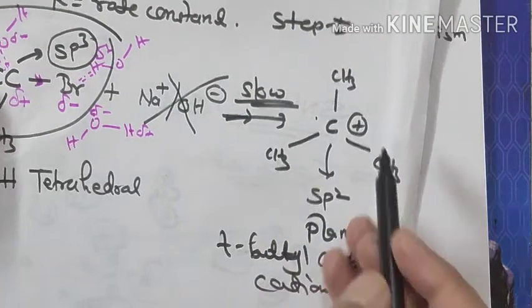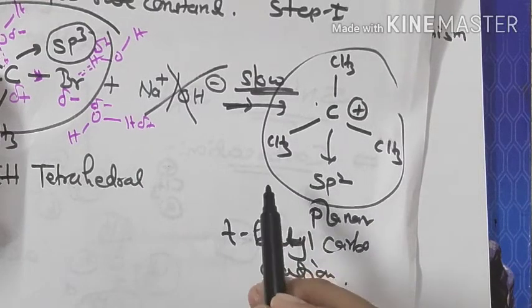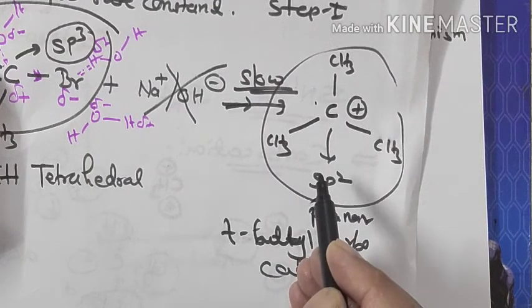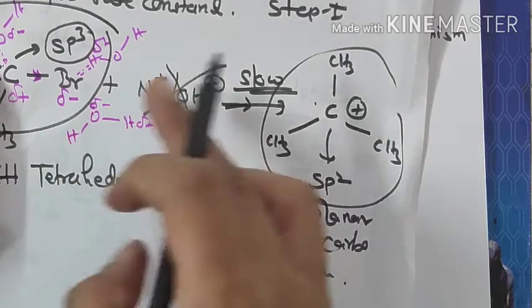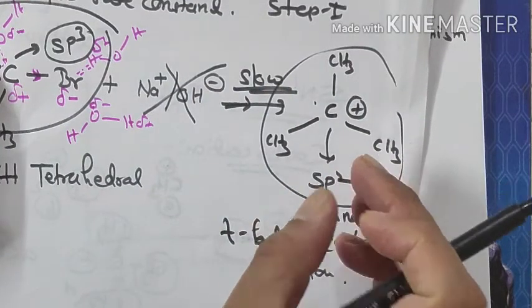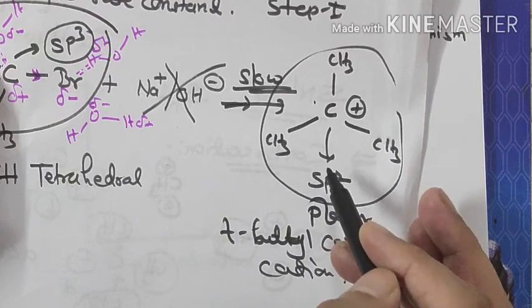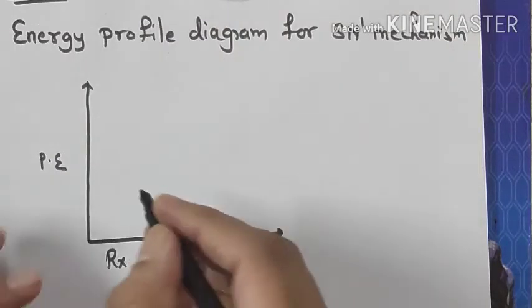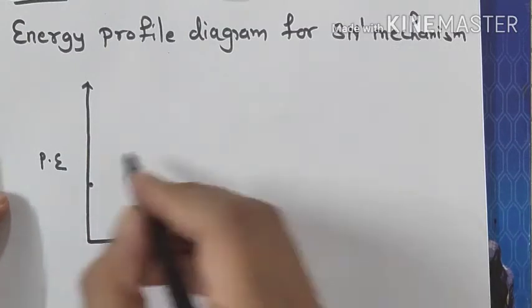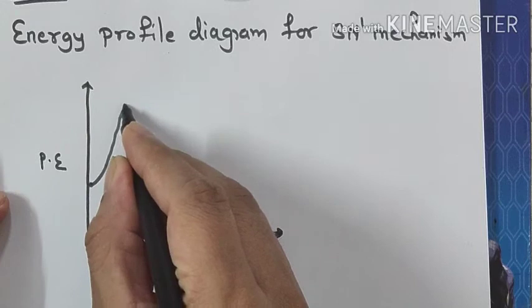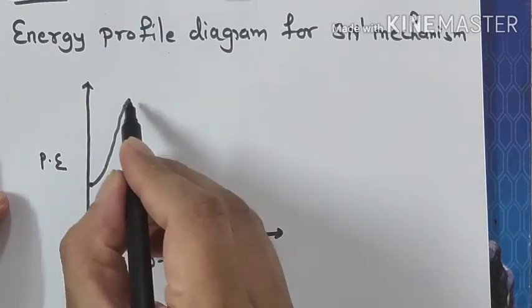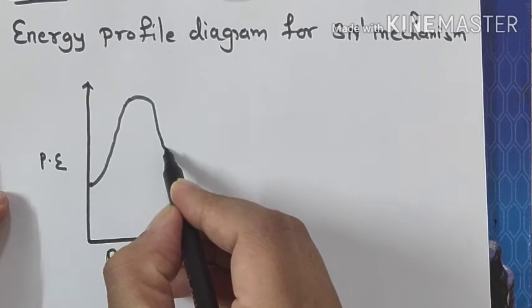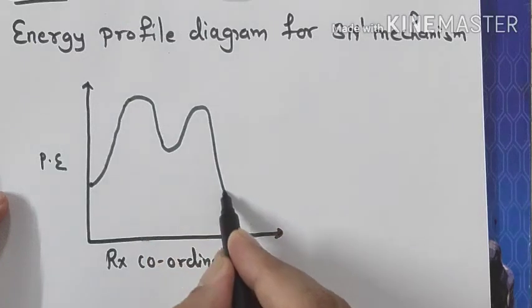In SN1 mechanism, remember it is a two-step reaction. In the first step there is formation of a carbocation. The energy of the reactant slowly increases, then decreases slightly because the tertiary carbocation is relatively stable, then further increases, and finally decreases to give us the product.